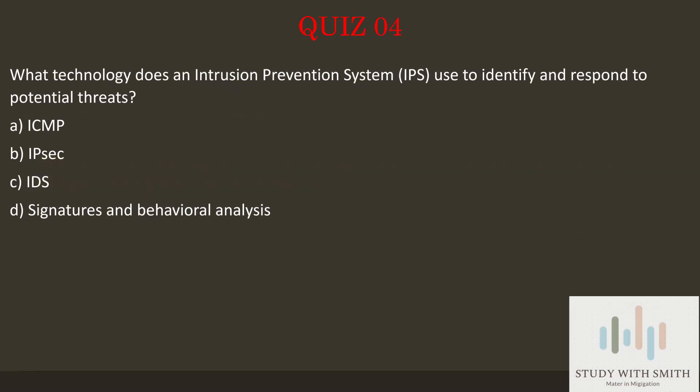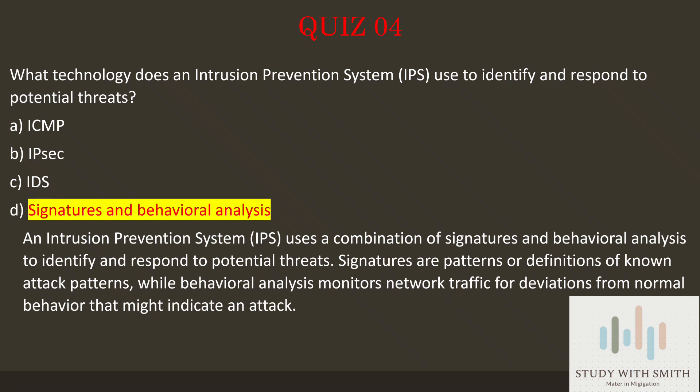Let's go to question 4. What technology does an Intrusion Prevention System, IPS, use to identify and respond to potential threats? Pause the video now to select the best answer. The answer is D: signatures and behavioral analysis.